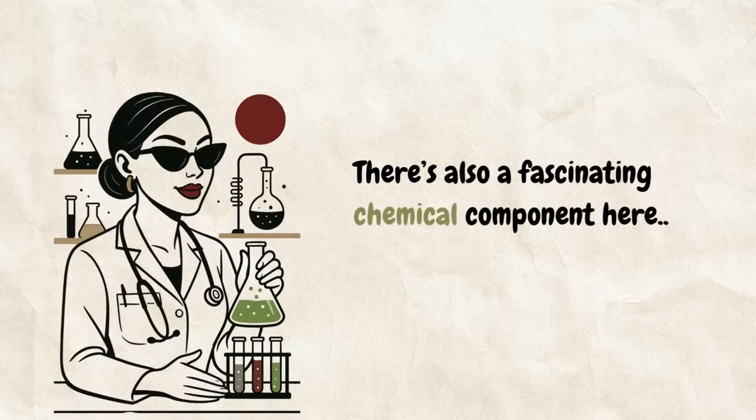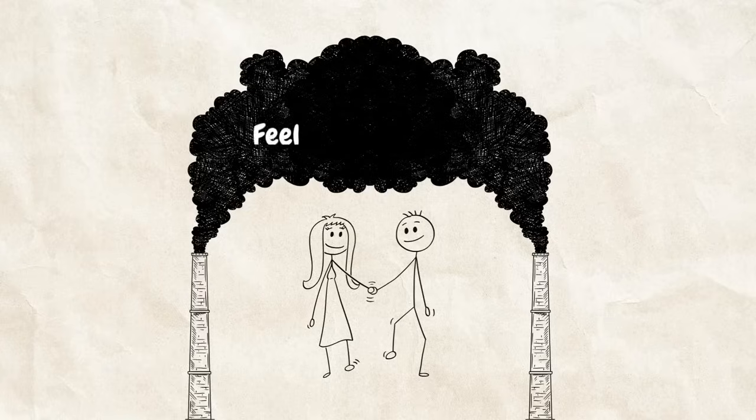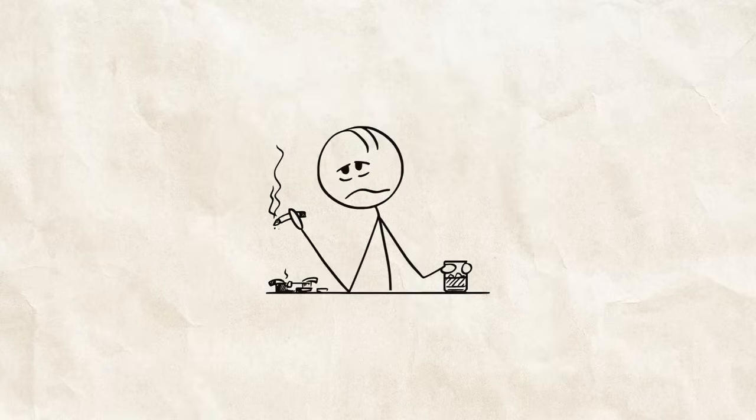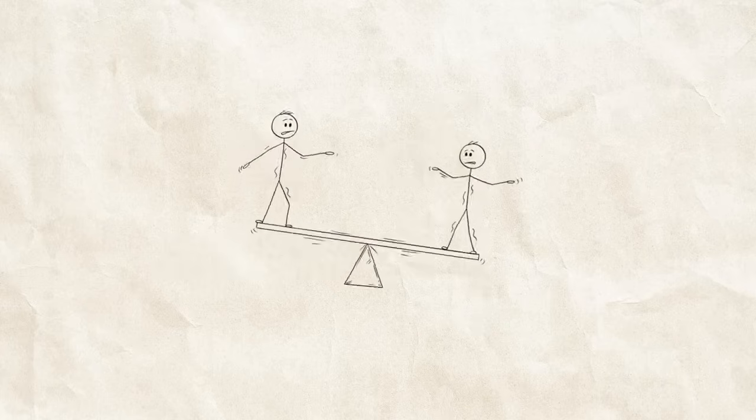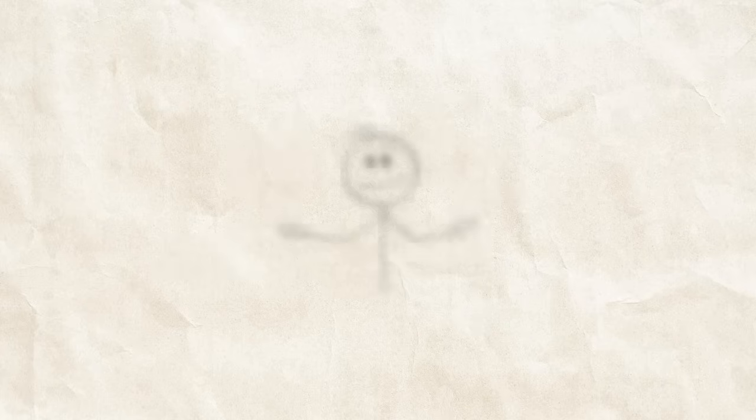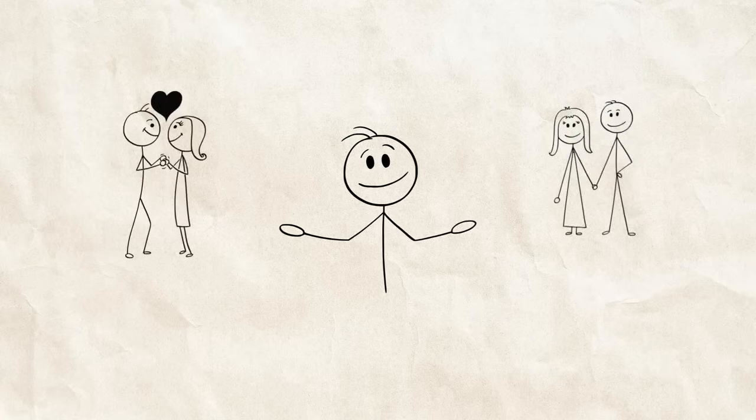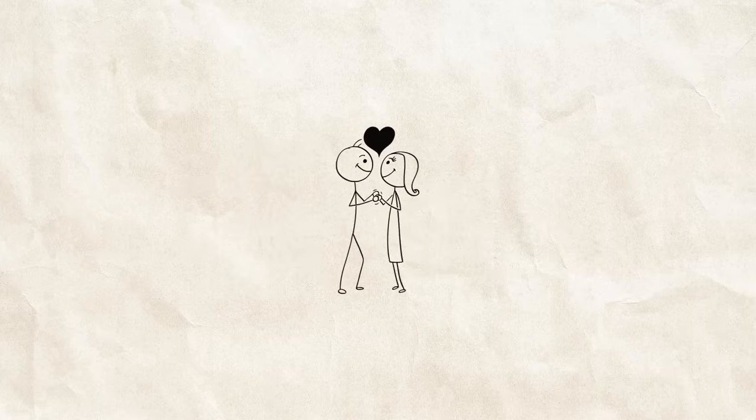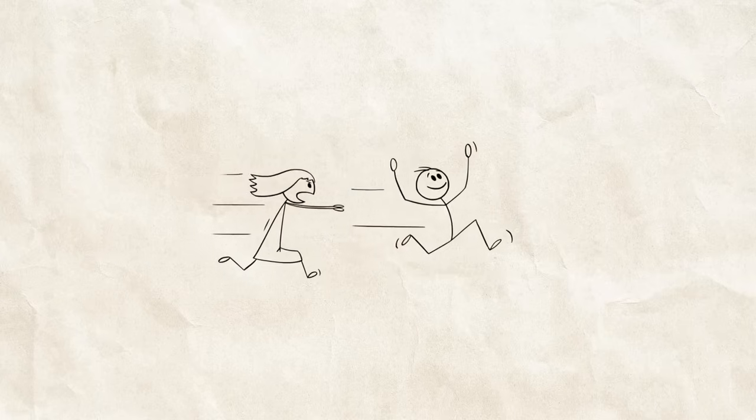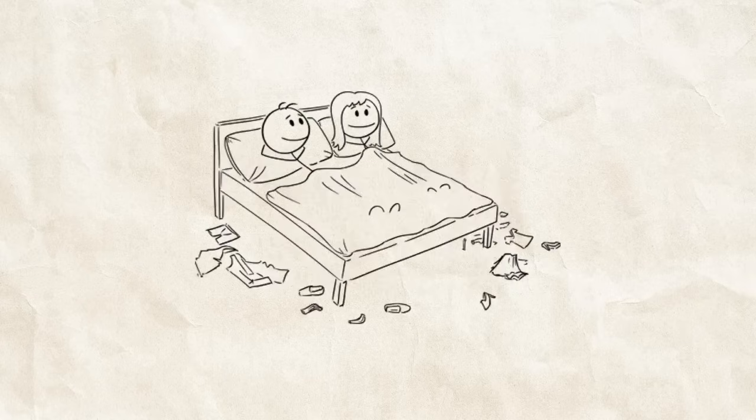There's also a fascinating chemical component here. When we fall in love, our brains are flooded with dopamine, oxytocin, and other feel-good chemicals. It's basically like being high. But that shit doesn't last forever. After about 12 to 18 months, those chemicals start to level off. This is when relationships transition from passionate love to companionate love. And guess what? Some people are literally addicted to that initial rush. They're chemical romance junkies, always chasing that next high. When the relationship stops giving them that dopamine hit, they look elsewhere for it.